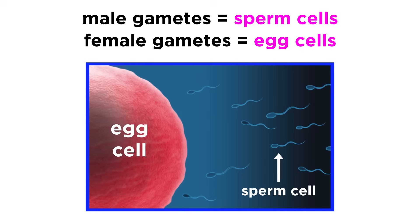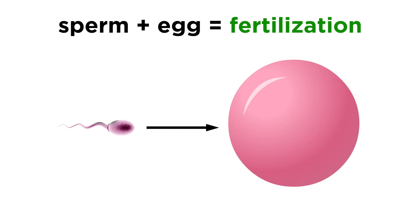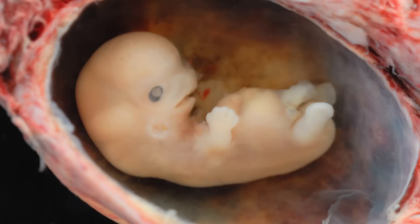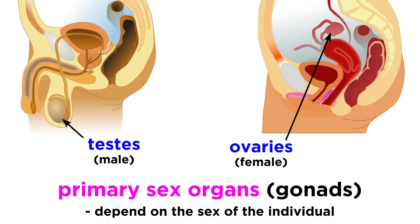The gametes produced in males are sperm cells, and the gametes produced in females are egg cells. When a sperm and an egg meet as the result of sexual intercourse, fertilization can result, which leads to a zygote, embryonic development, and eventually the birth of a new human being. But the primary sex organs are not the only components of the reproductive system, so there is lots more to discuss.